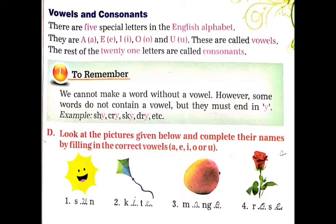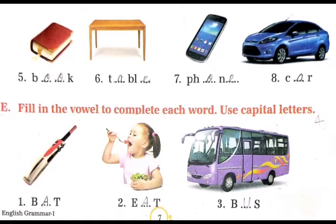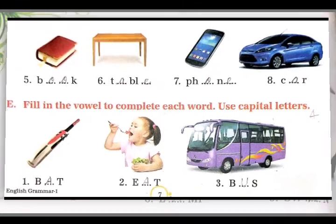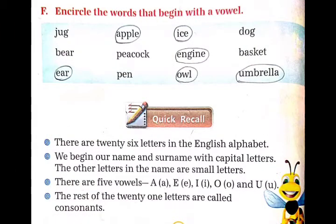Exercise D: Look at the pictures given below and complete their names by filling in the correct vowels A, E, I, O, U. नीचे दिये गए pictures को देखिए और correct vowels के साथ उनके names को complete करना है. Exercise E: Fill in the vowel to complete each word. Use capital letters. आपको प्रत्येक word को vowel से complete करना है और capital letters use करना है. Exercise F: Encircle the words that begin with a vowel. एक vowel के साथ शुरू होने वाले words को circle करना है.